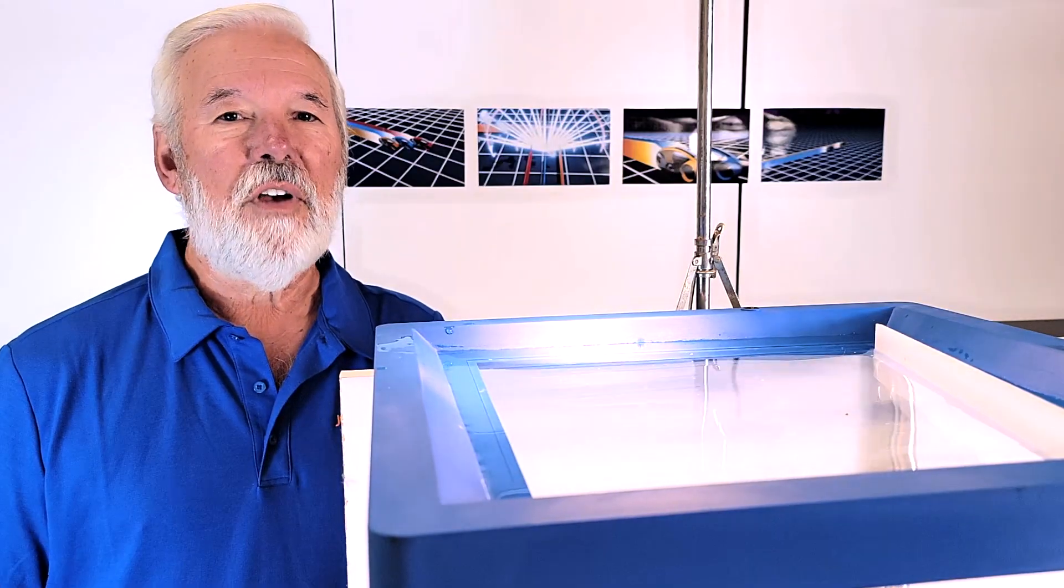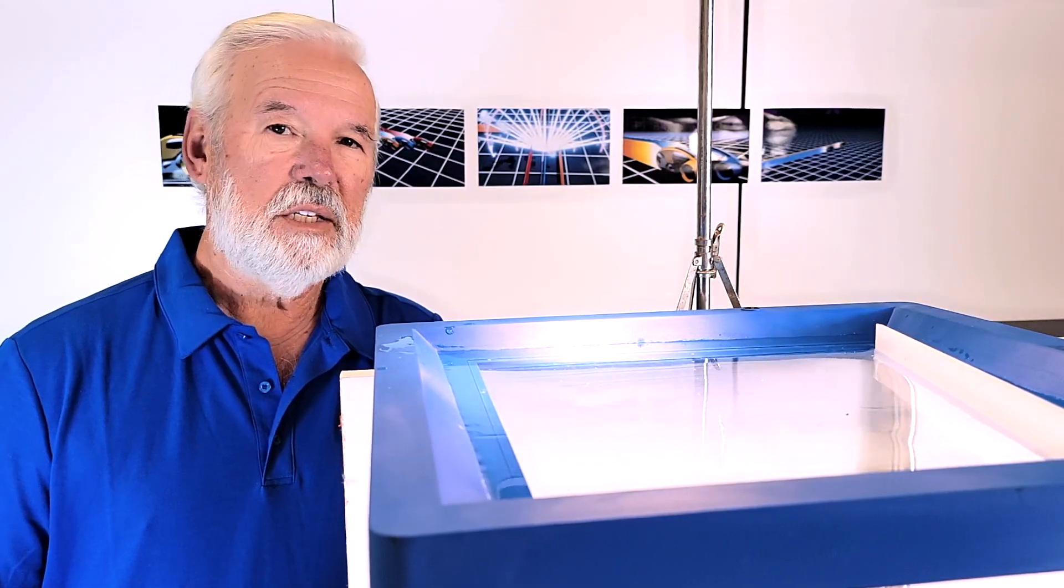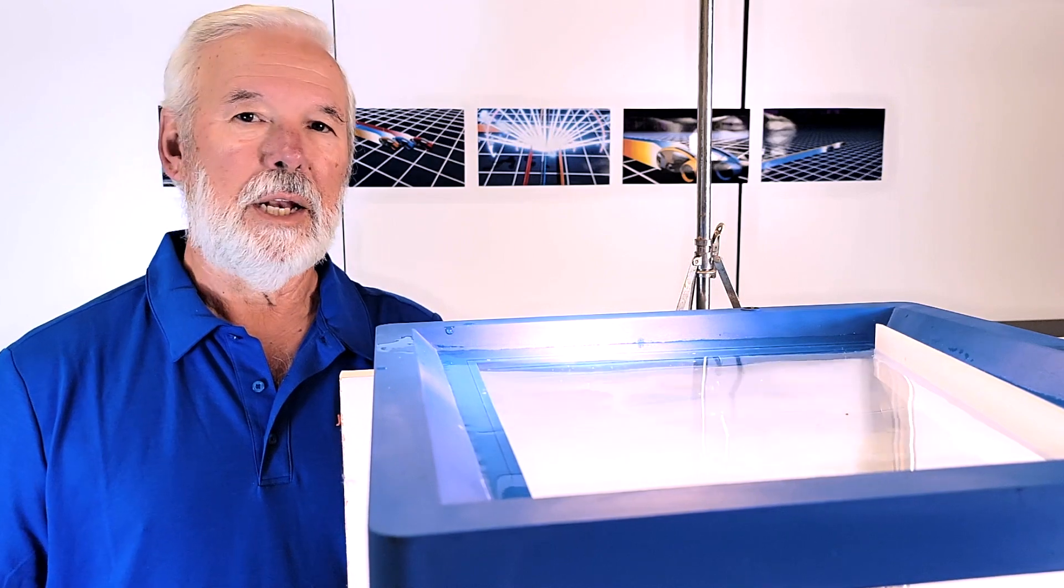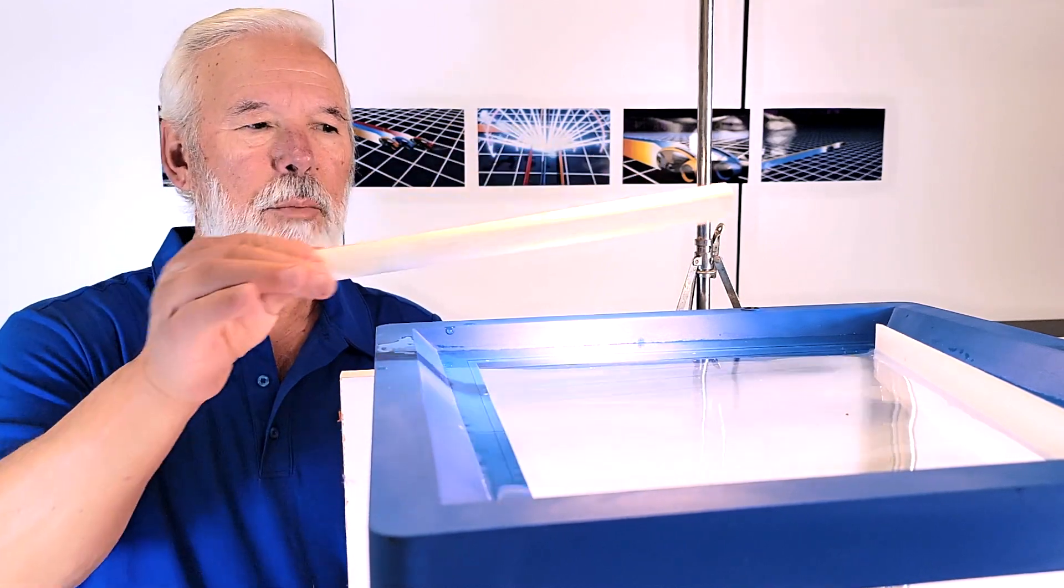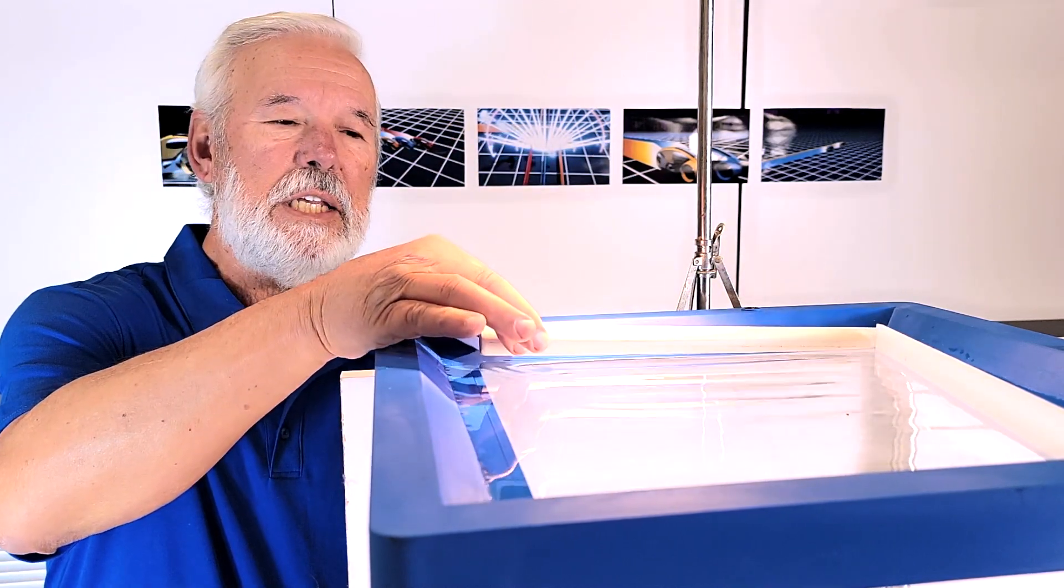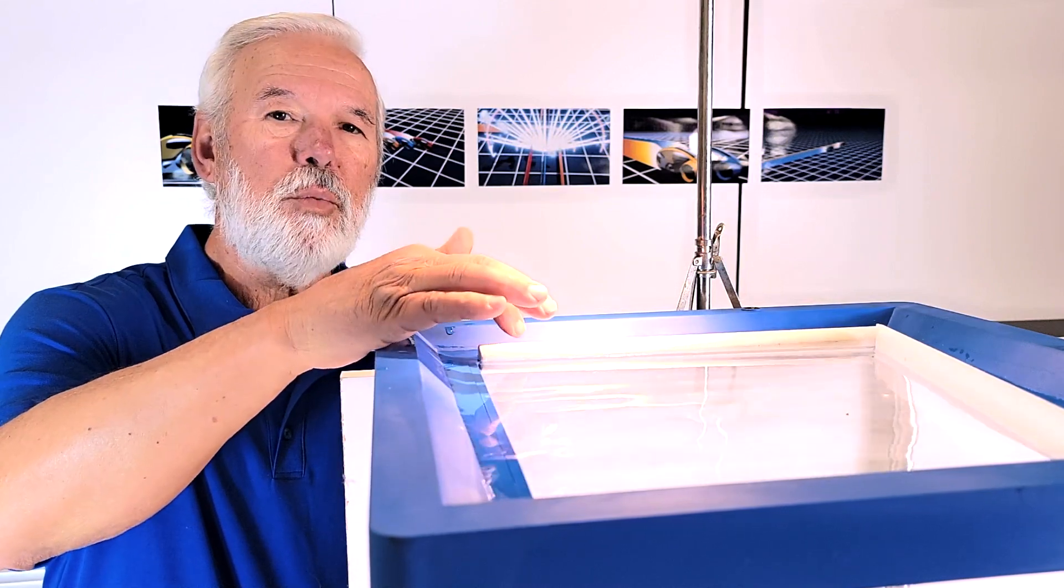This is my simplified ripple tank setup. Instead of springs, hooks, and a plug-in electric motor, I purchased a scrap piece of 1.5-inch PVC tubing at my local hardware store.